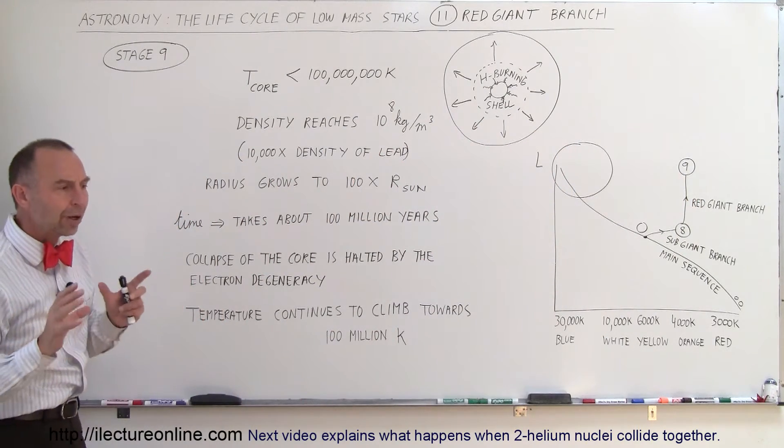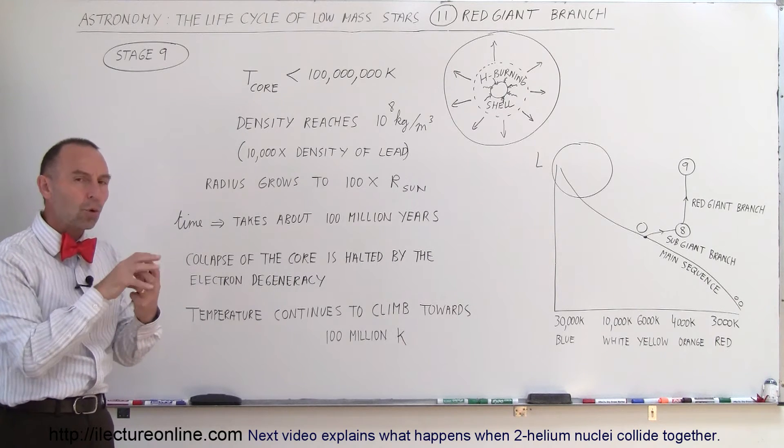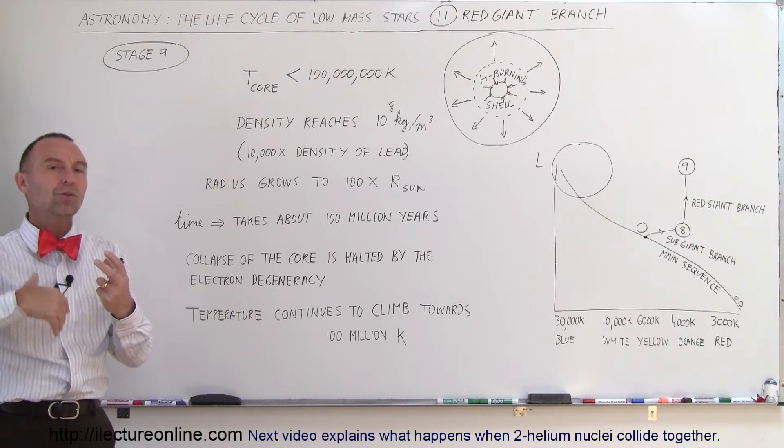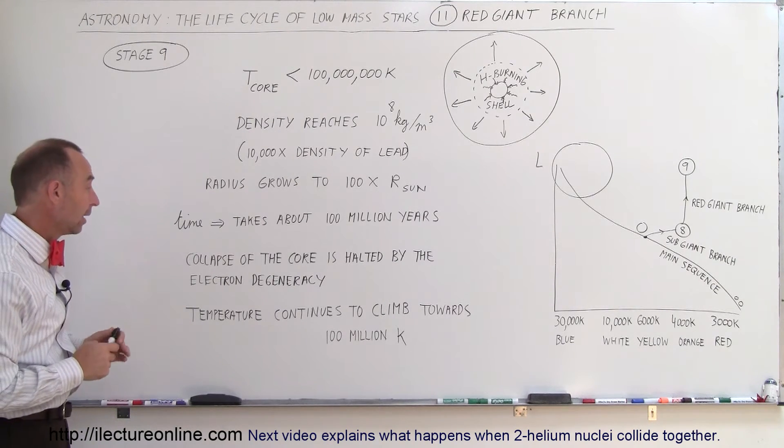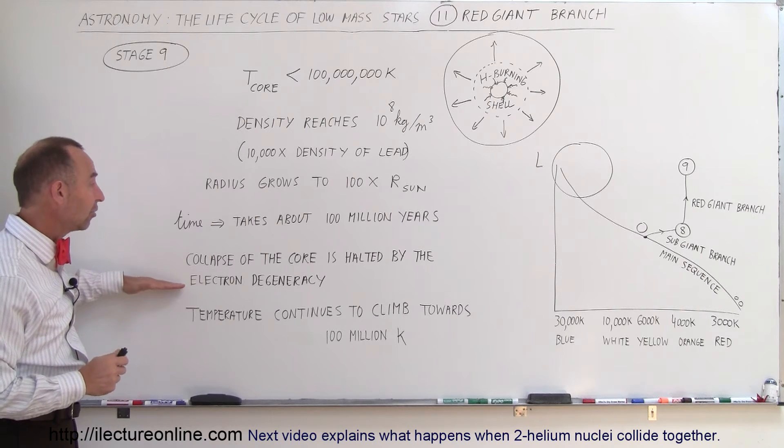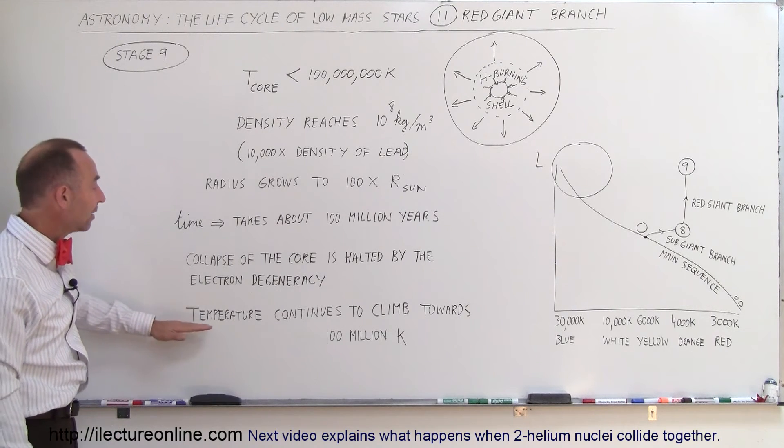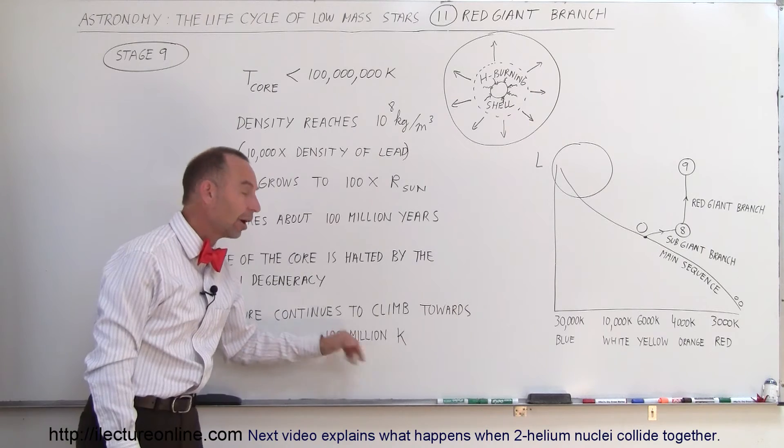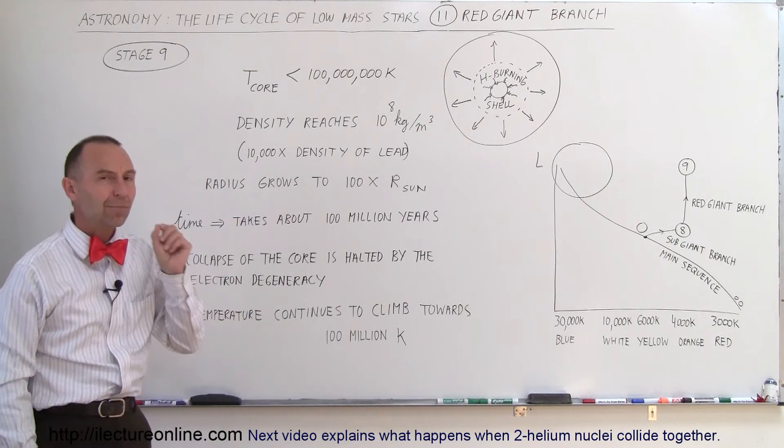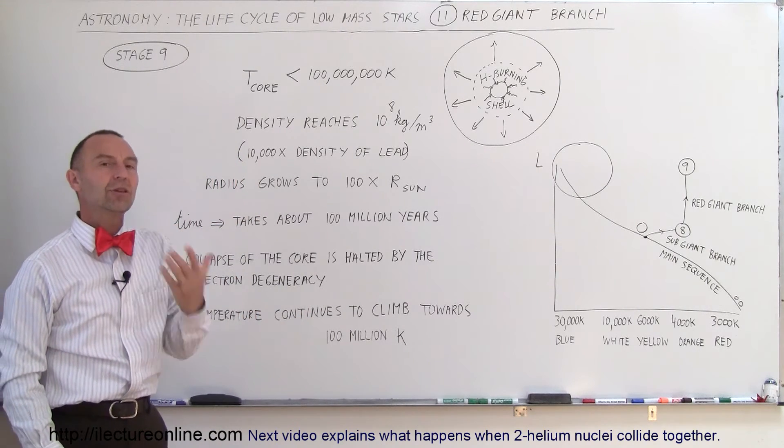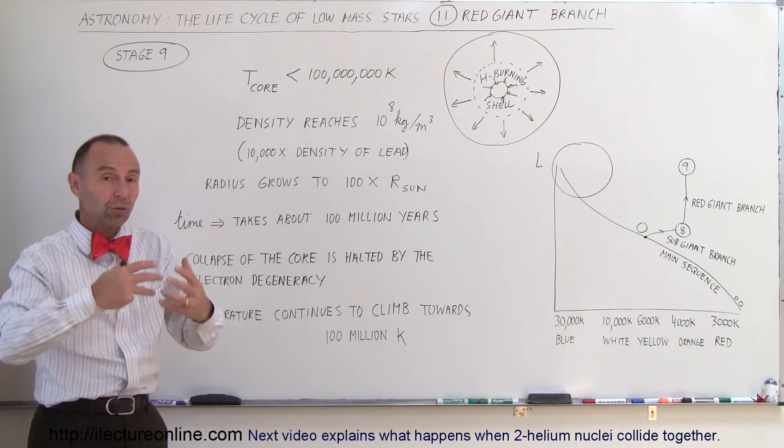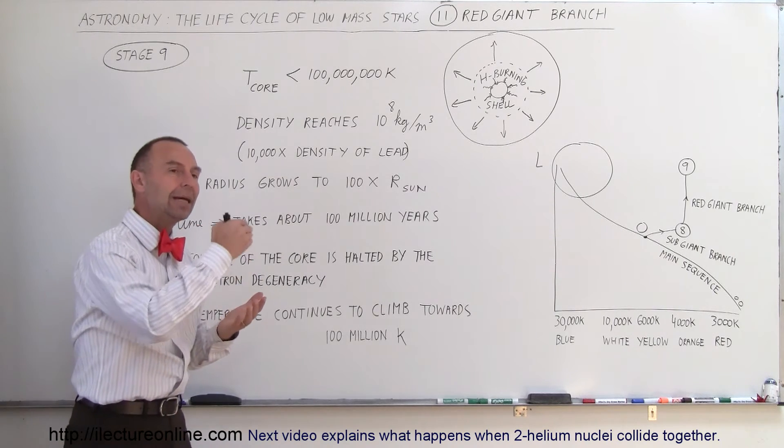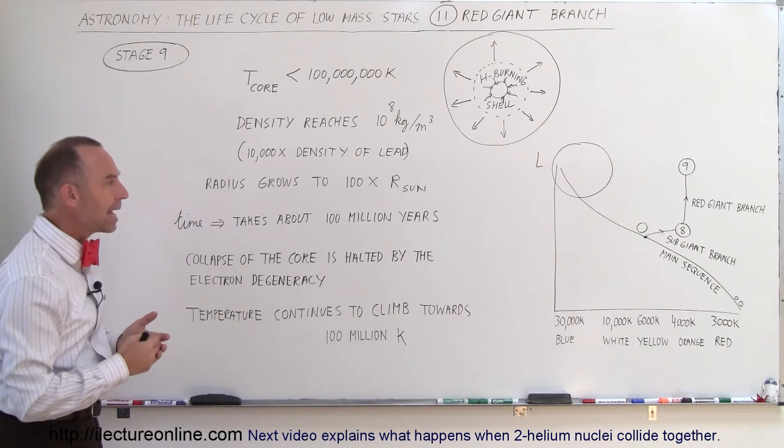But it's not yet truly a red giant in the sense that in the core, the nuclear fusion process hasn't restarted to the next stage yet. The collapse is halted by electron degeneracy and the temperature continues to climb towards 100 million Kelvin. At 100 million Kelvin, the star becomes a different star. Now, the nuclear fusion process will re-engage in the core, burning helium into carbon. But that hasn't happened yet.